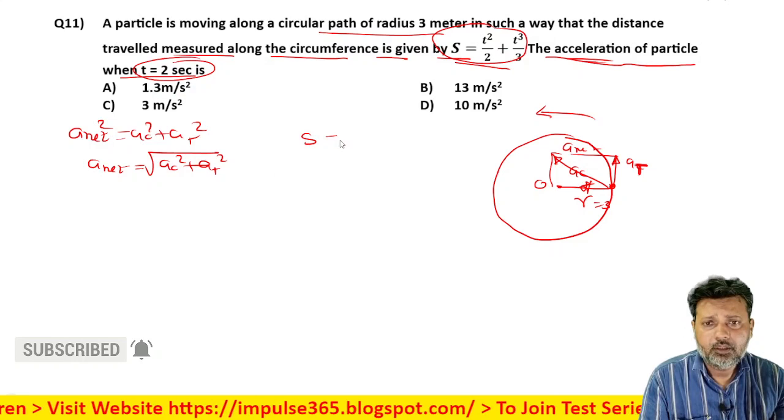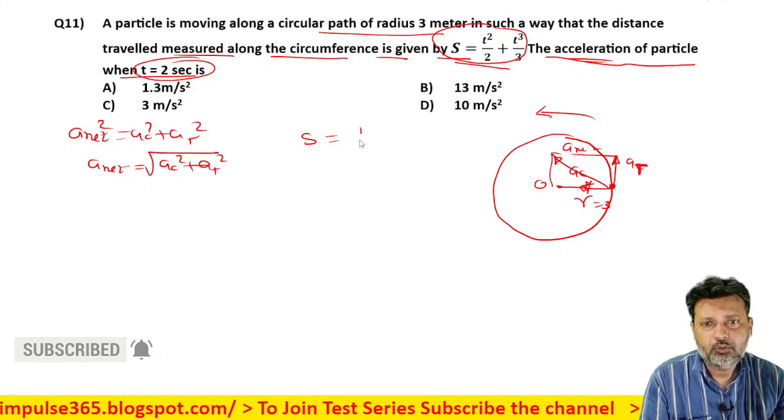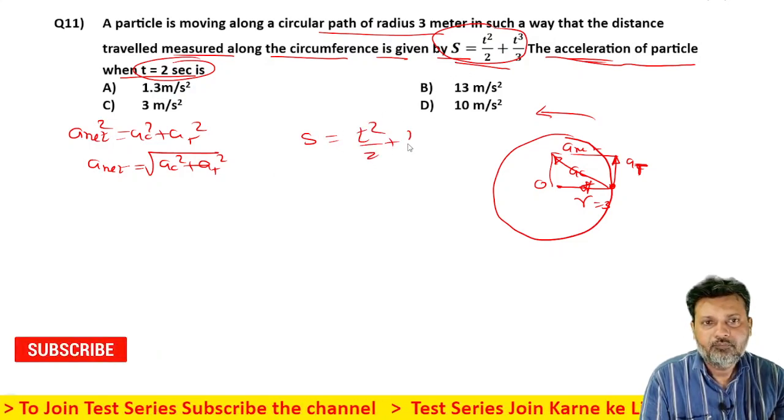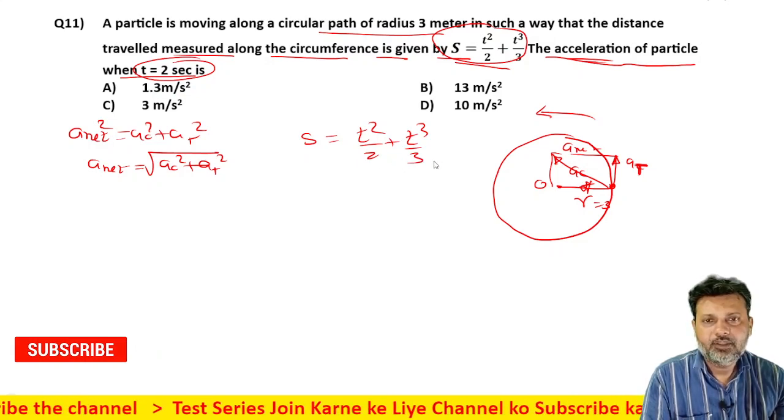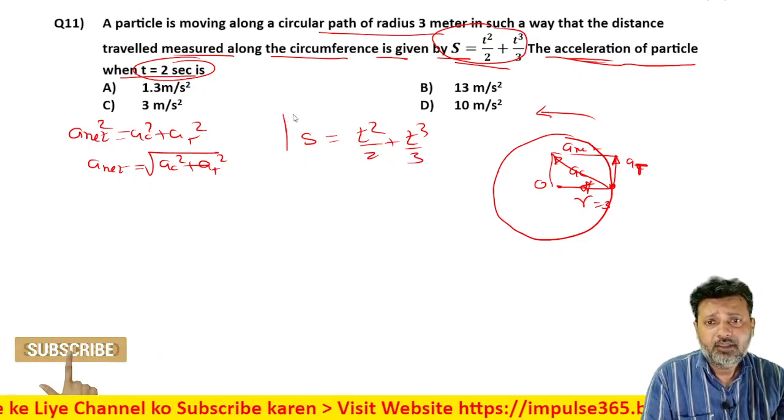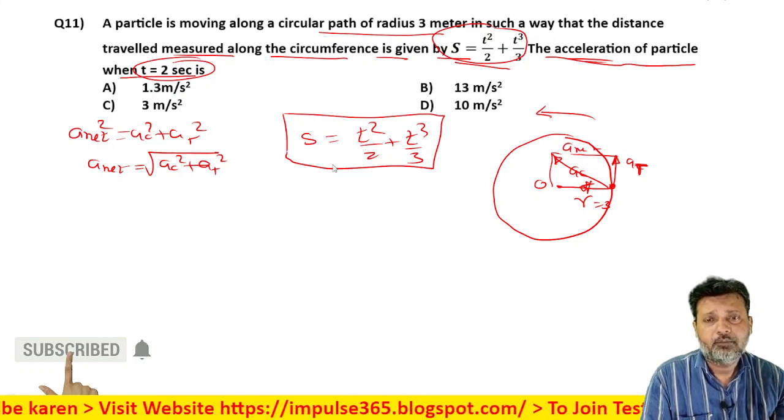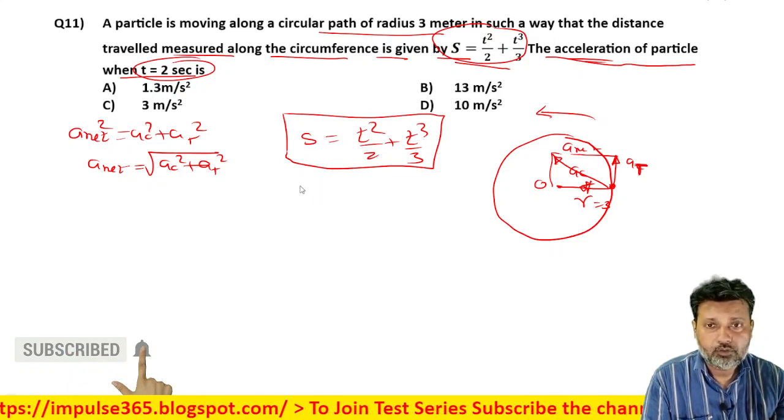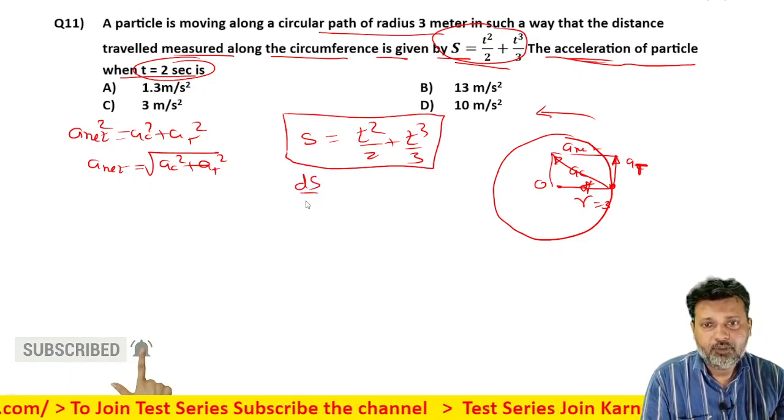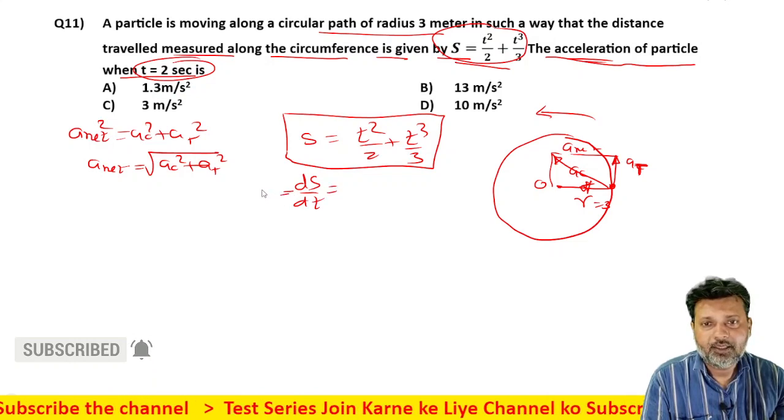So generally we can write the equation like this: t square by 2 plus t cube by 3. This is the equation. If we differentiate this equation with respect to time, we get velocity. So I differentiate this with respect to time, velocity will come.